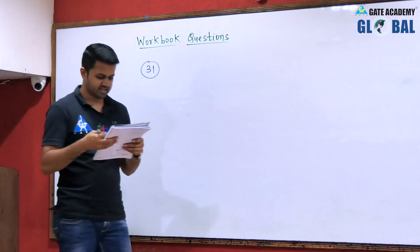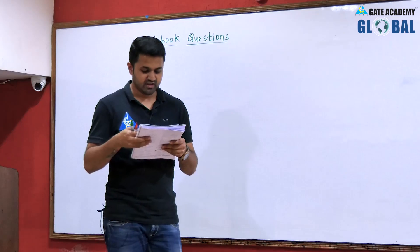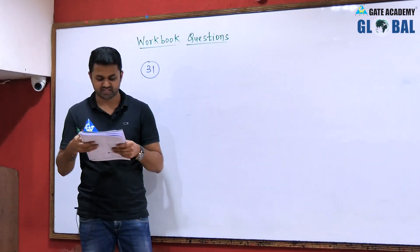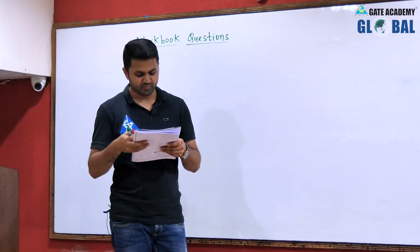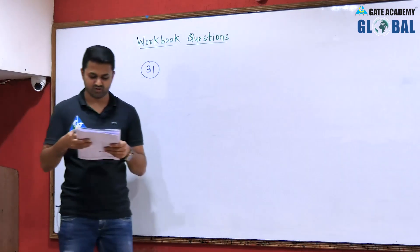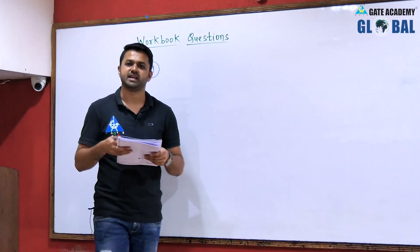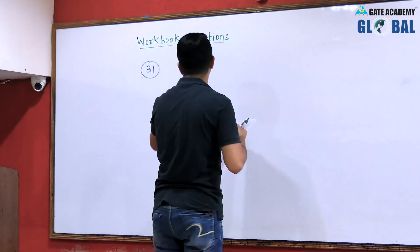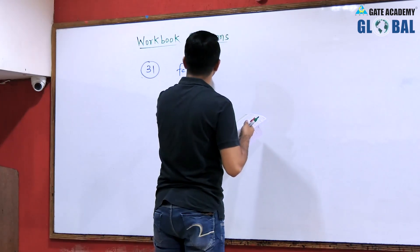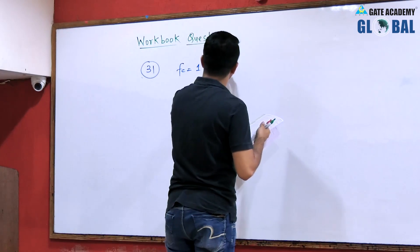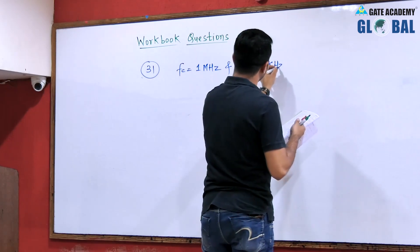Question number 31: An AM signal is detected using an envelope detector. The carrier frequency and modulating signal frequency are 1 megahertz and 2 kilohertz respectively. An appropriate value for the time constant of the envelope detector is to be found. So, fc = 1 MHz and fm = 2 kHz are given.